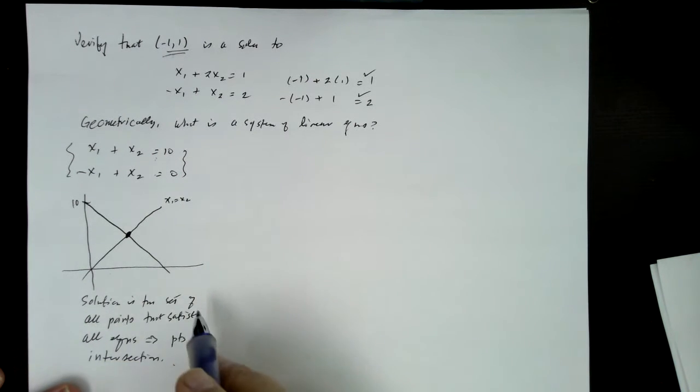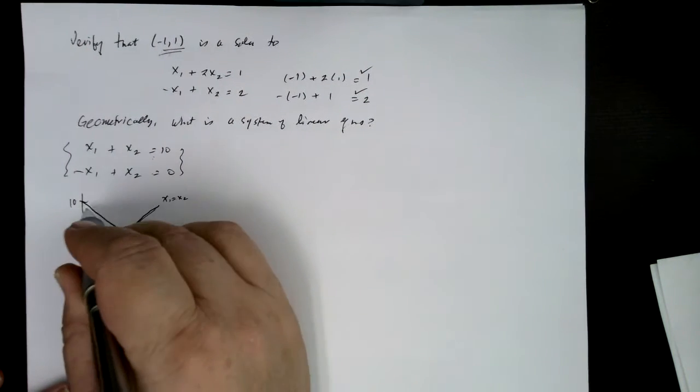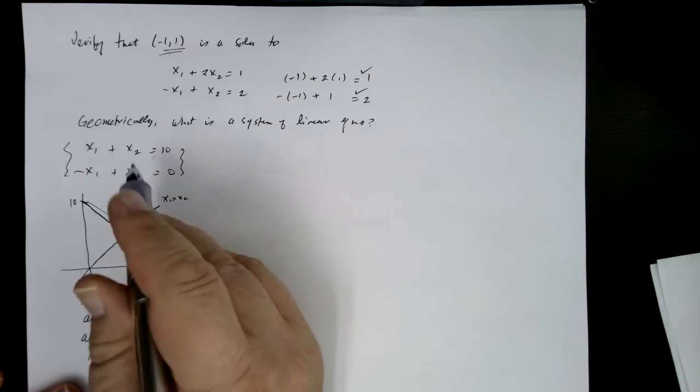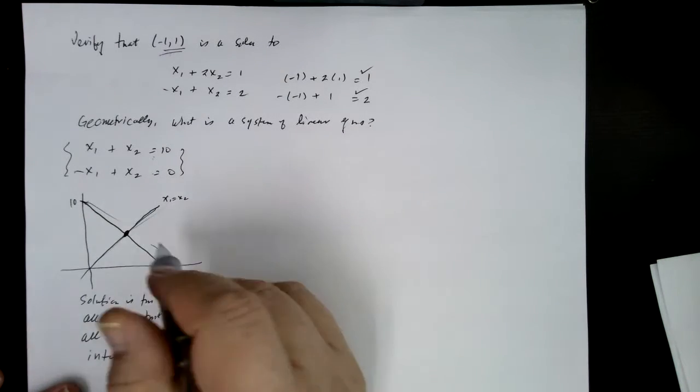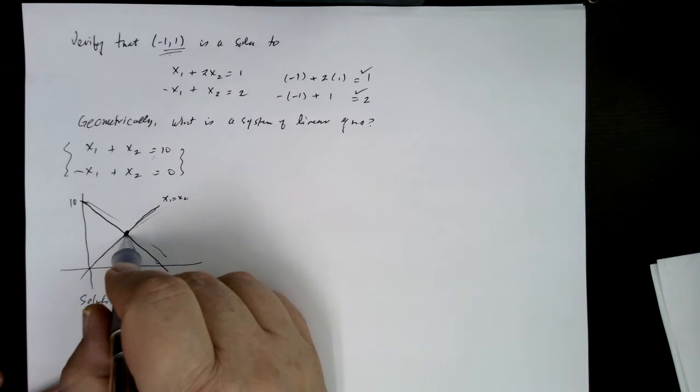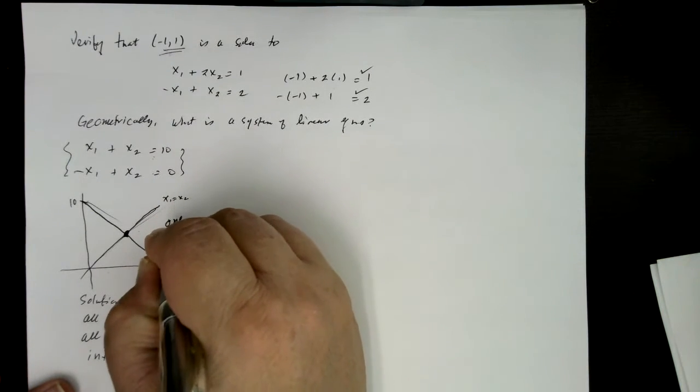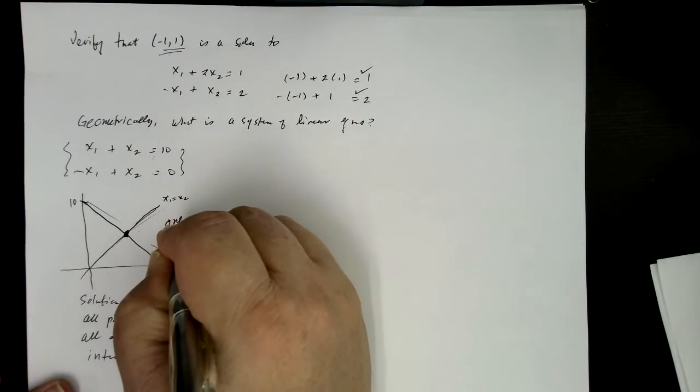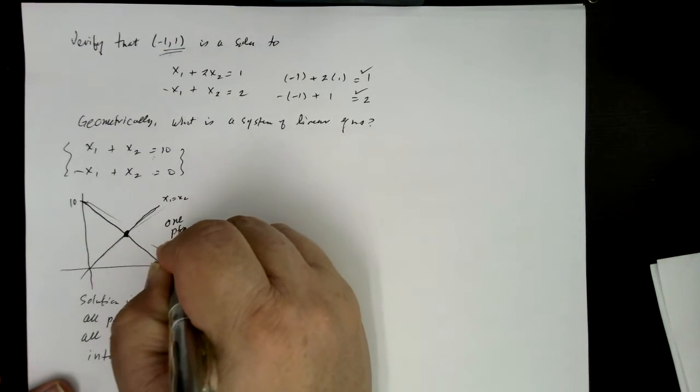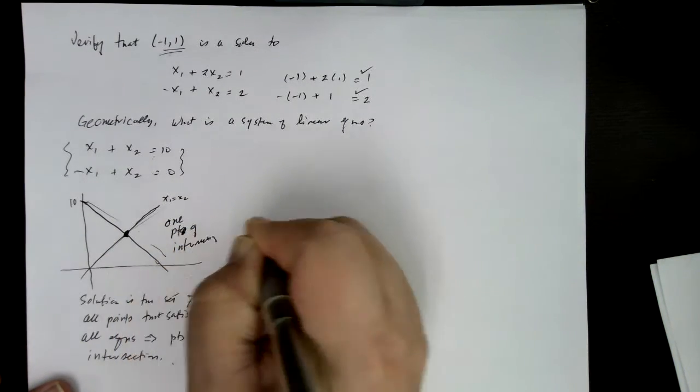Okay, so how can two lines intersect in the plane? Well, this is the generic form. If you take two random lines in the plane, they will probably just intersect in one point. So in this case, we have one point of intersection.